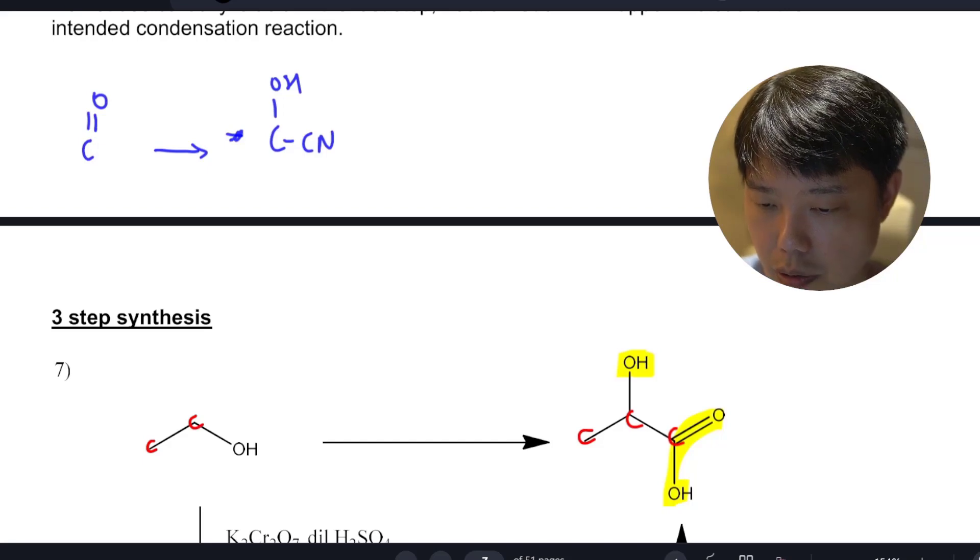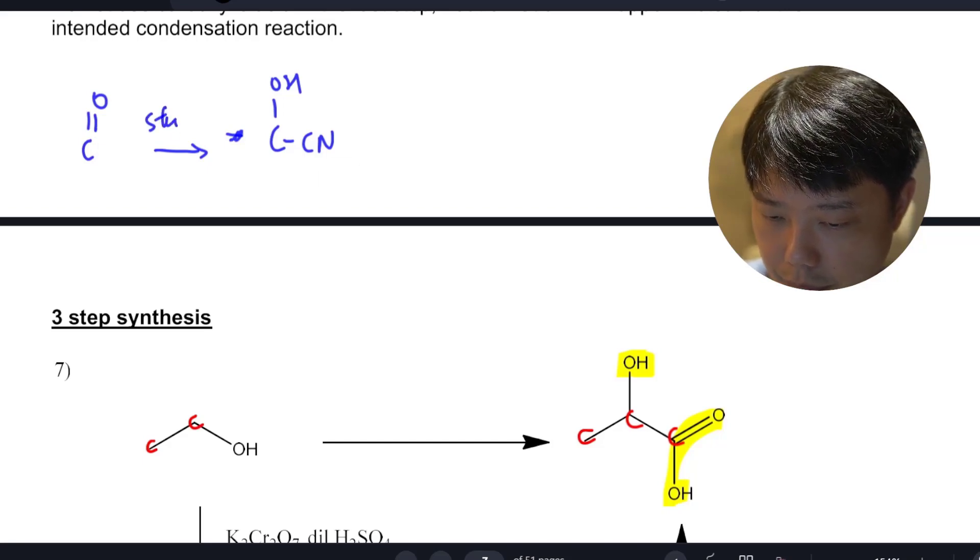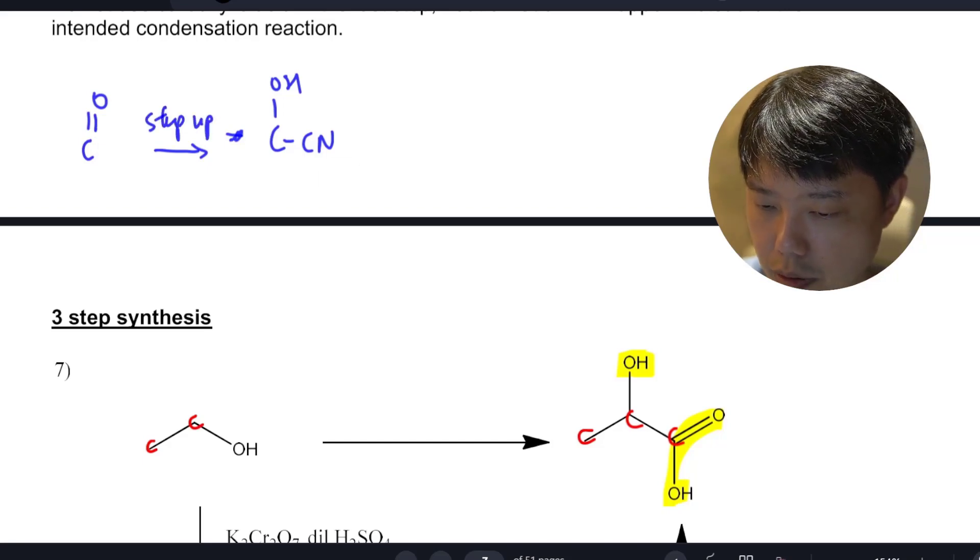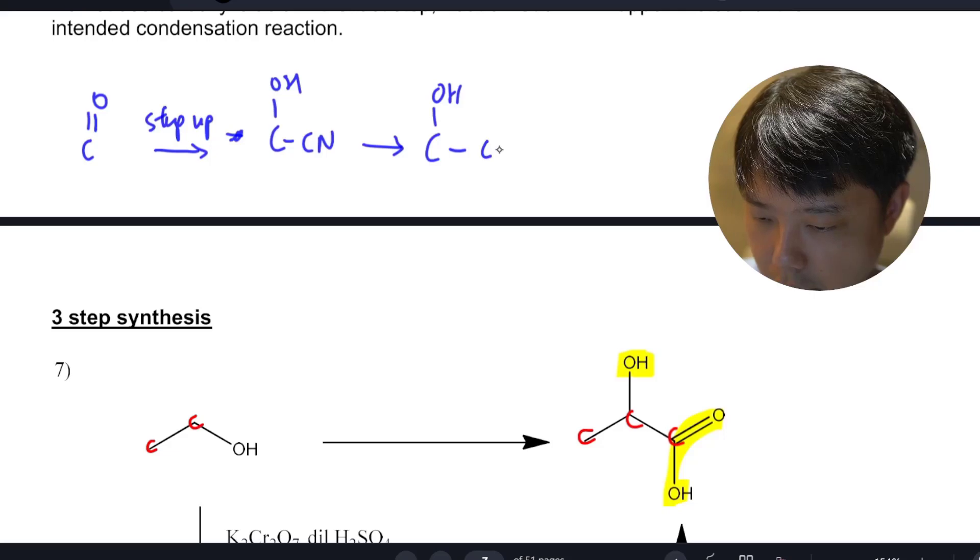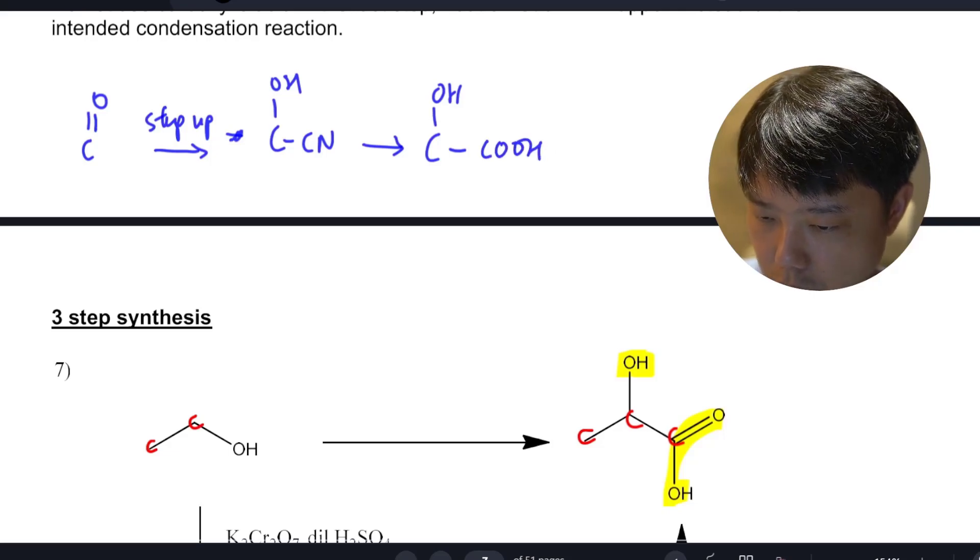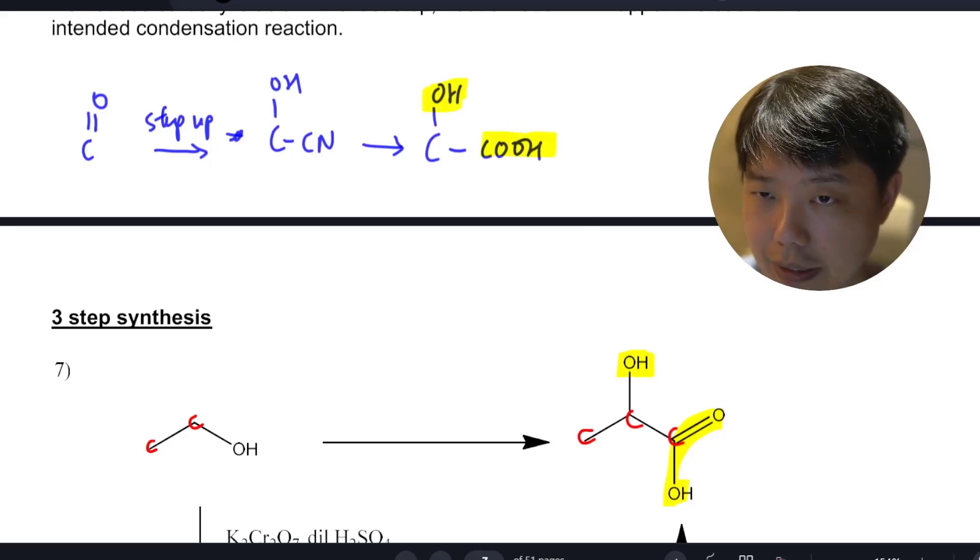So you have your carbonyl here. You step up, so you get two functional groups. And then this functional group, you can actually do an acid hydrolysis to get to these two functional groups that are just adjacent to each other.